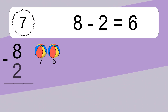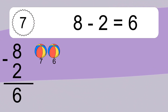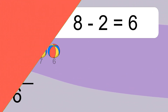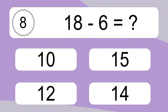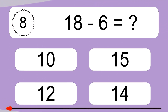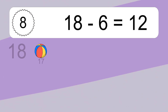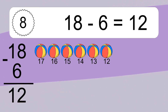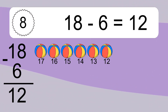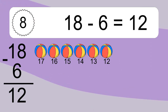8 minus 2 equals 6. Let's count it: 7, 6. 18 minus 6 equals 12. Let's count it: 17, 16, 15, 14, 13, 12.